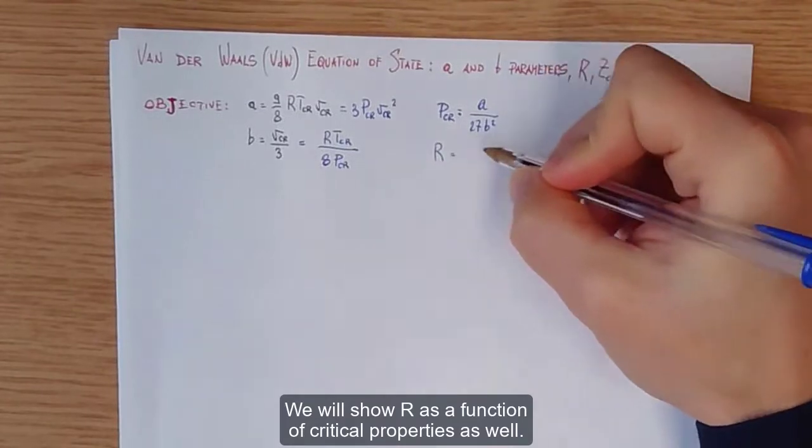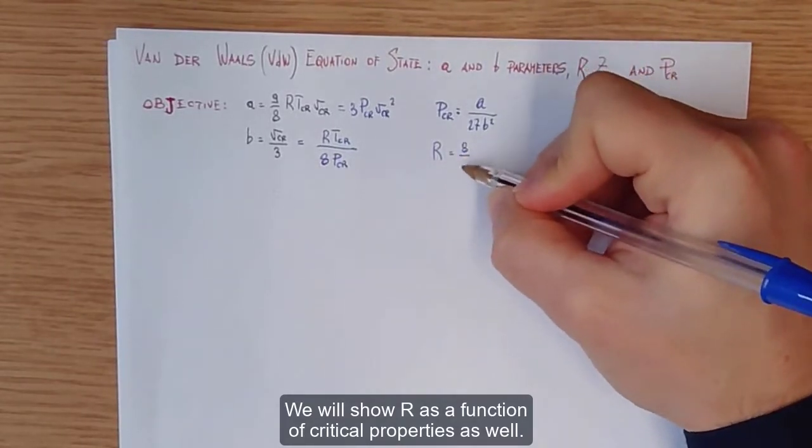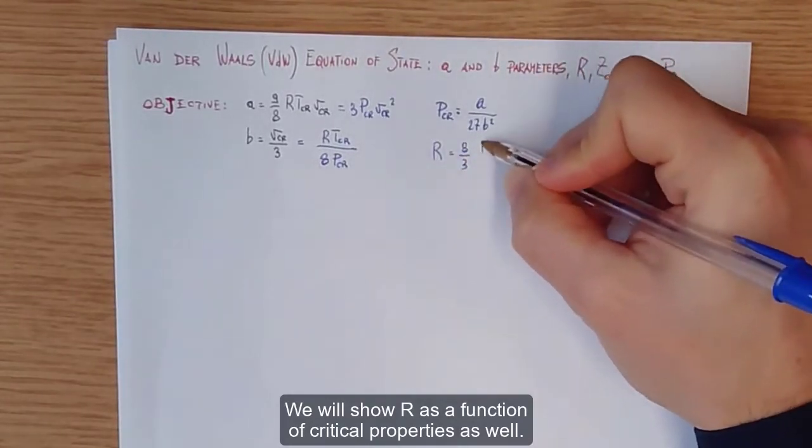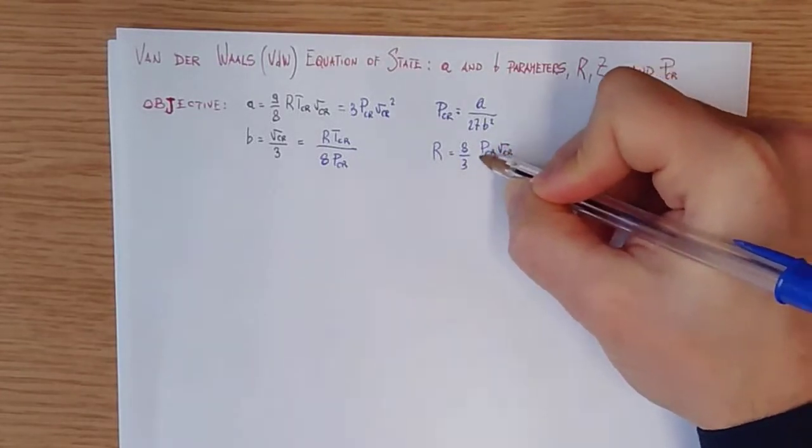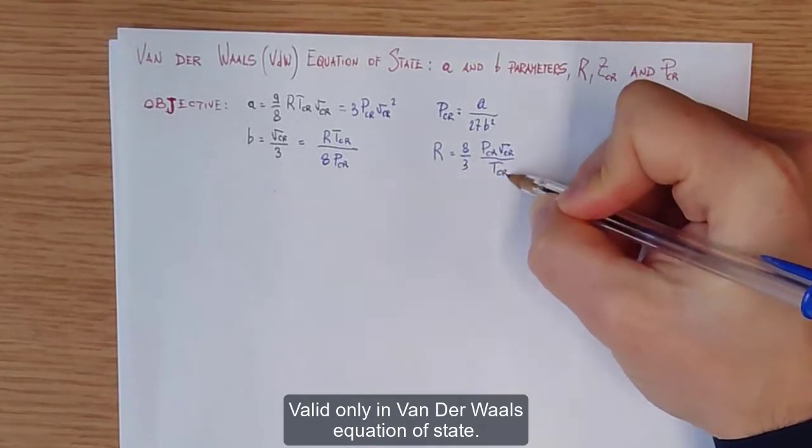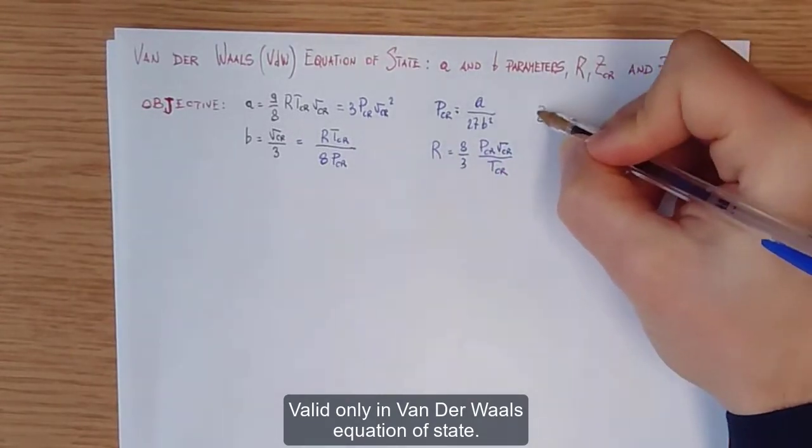We will show R as a function of critical properties as well, valid only in the Van der Waals equation of state.